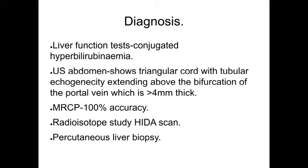Diagnosis: liver function test shows conjugated hyperbilirubinemia. Ultrasound abdomen shows a triangular cord with tubular echogenicity extending above the bifurcation of the portal vein, more than 4 mm in thickness. MRCP has 100% accuracy. Radioisotope study with HIDA scan and percutaneous liver biopsy are also used.